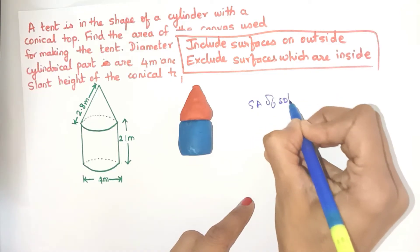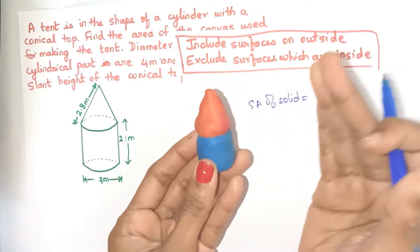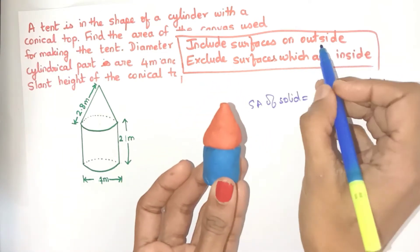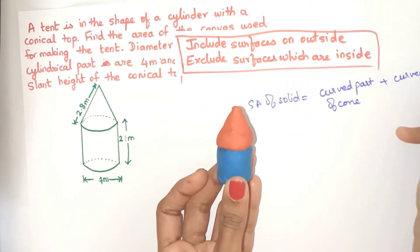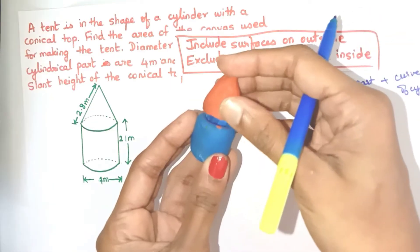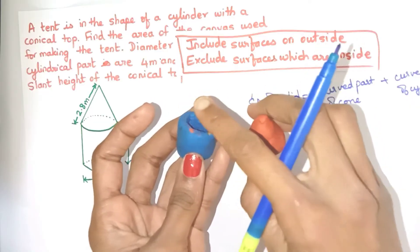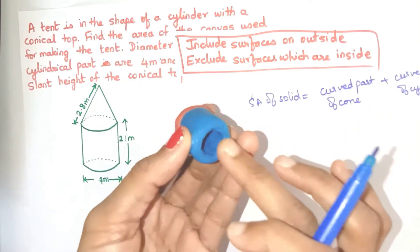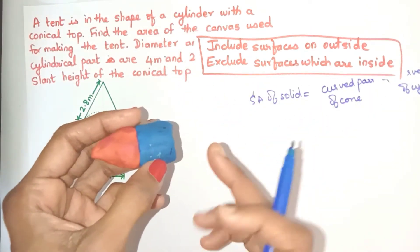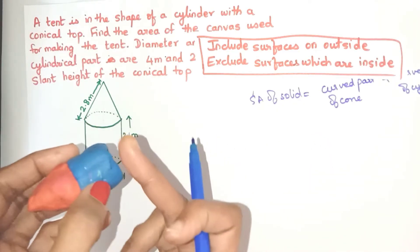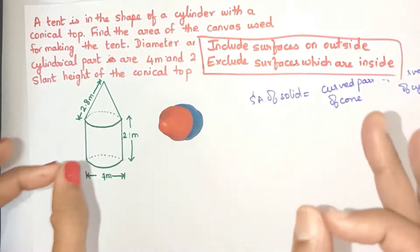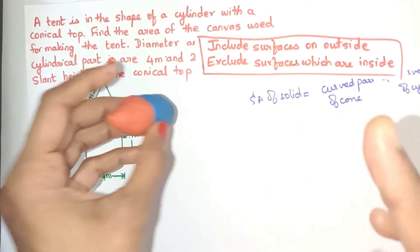The surface area of this solid will include the curved part of the cone, which is on the outside, and the curved part of the cylinder, which is also outside. The flat part of the cone and the top flat part of the cylinder are both inside the solid, so we exclude them. The bottom flat part of the cylinder does occupy the surface, but since we need canvas to cover the tent and the bottom is always on the ground, we will not include it.